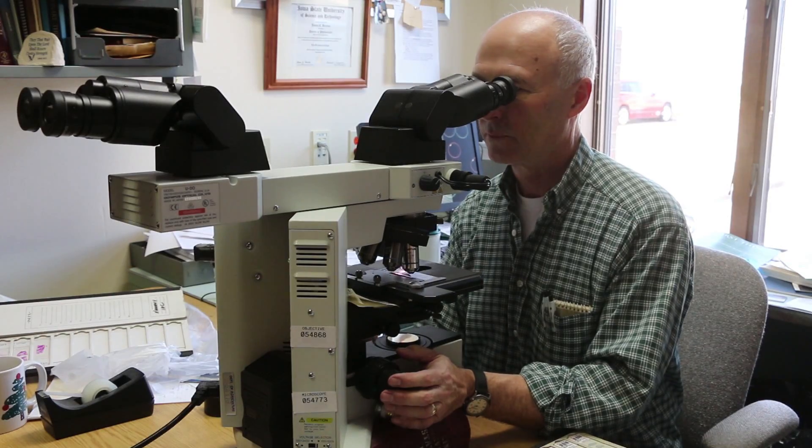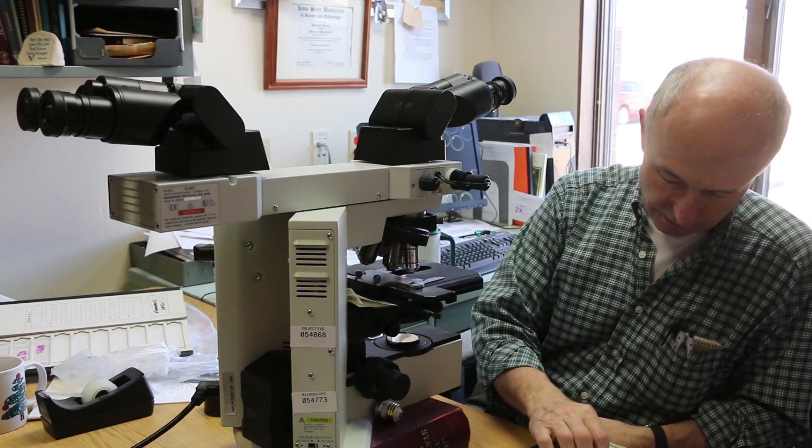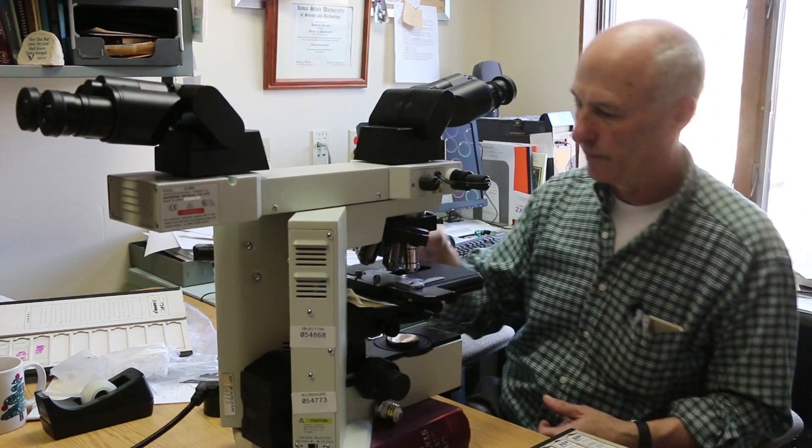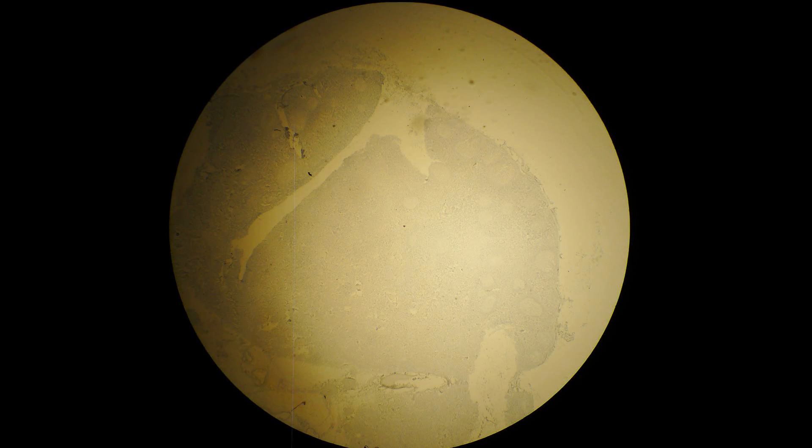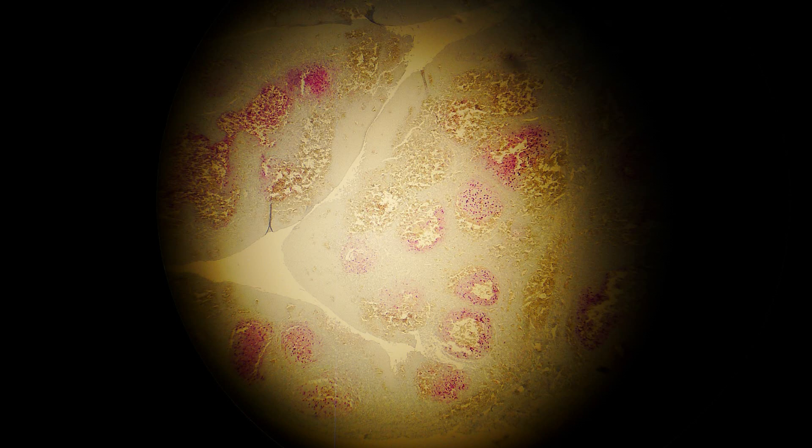Once the slides have been stained, they are reviewed by a veterinarian who looks for signs of the disease. Under the microscope, we can compare two samples. The first slide shows a piece of healthy lymph tissue. The next slide shows the red staining that indicates the presence of chronic wasting disease.